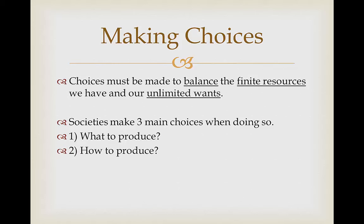The second choice is how to produce it. Production methods are going to help decide how many products and services are going to be made using our resources, so we need to know how we're going to produce these to get all the energy or resources that we need. The final choice is for whom to produce. Society decides how products and services are going to be distributed, so we need to know who the producers are going to be so that they can get paid and distribute everything correctly.